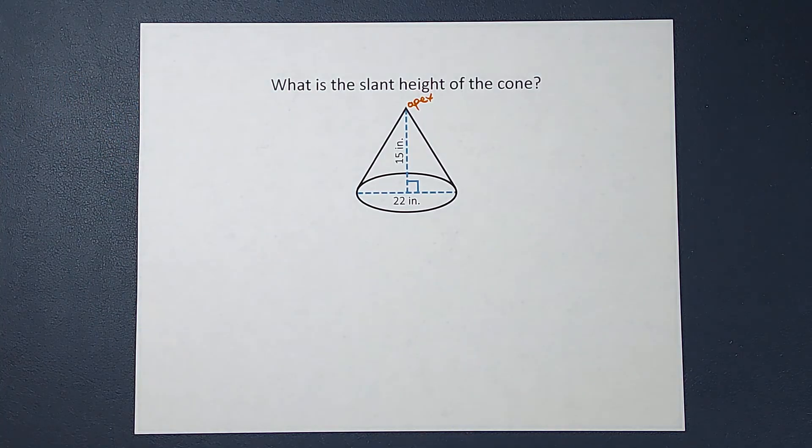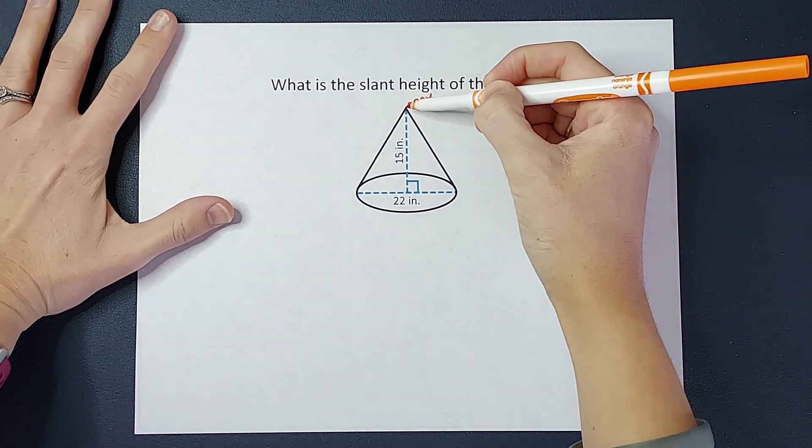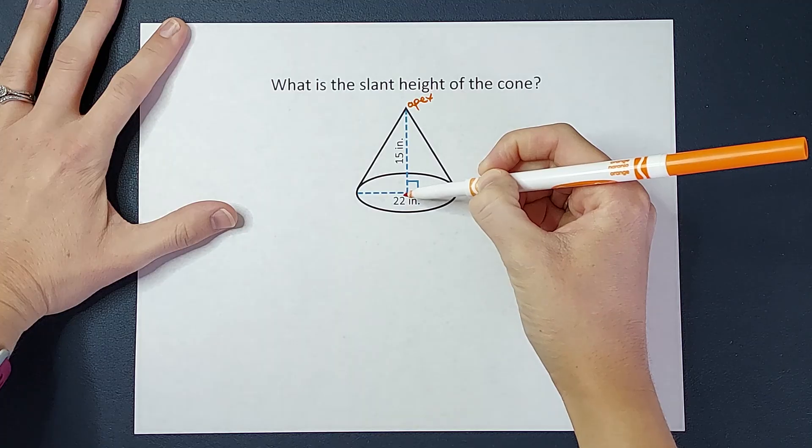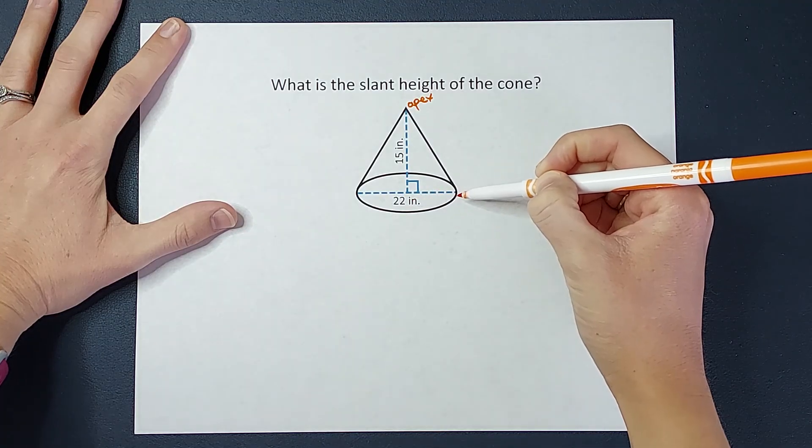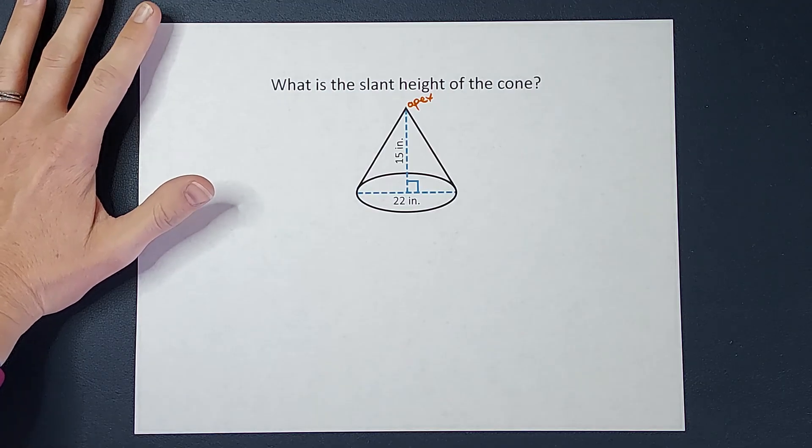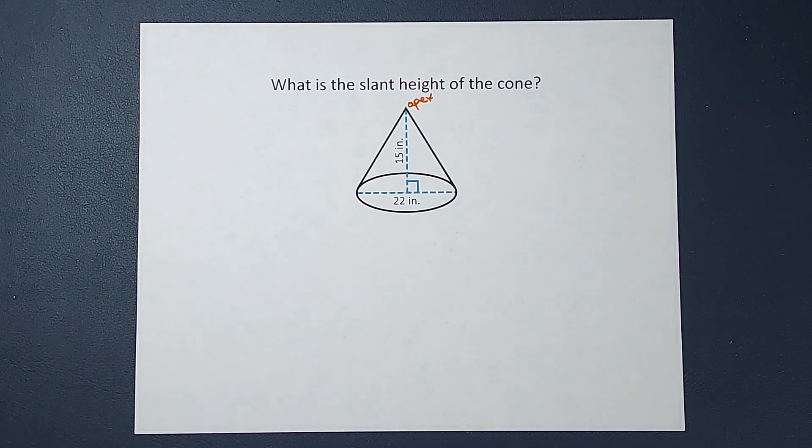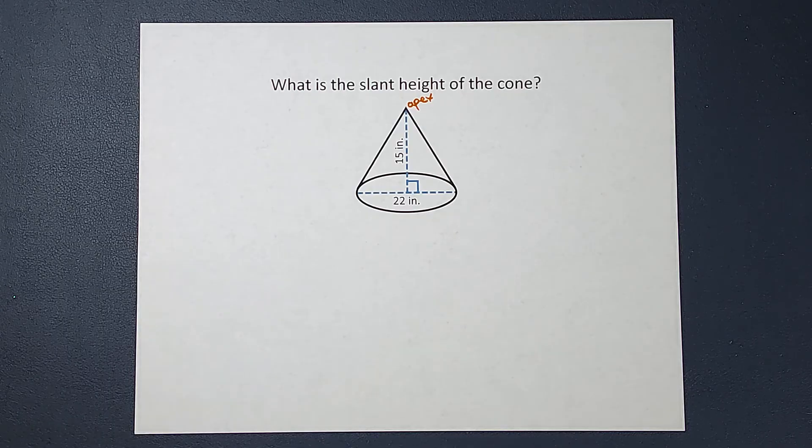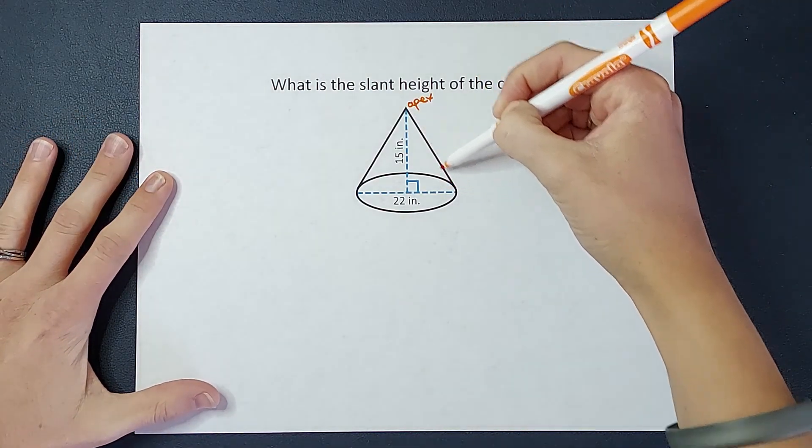And if you think about a cone, if you think about measuring from the top to the bottom and then across and up, do you see how that makes a right triangle? So we can use the fact that that's a right triangle to help us figure out this slant height right here.